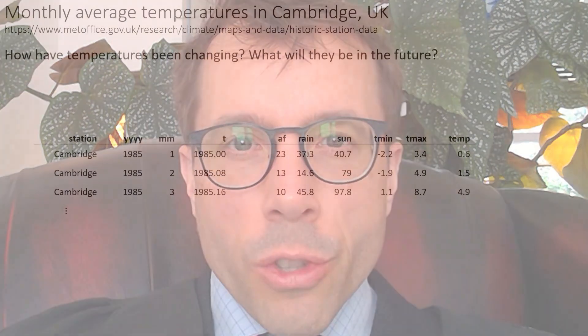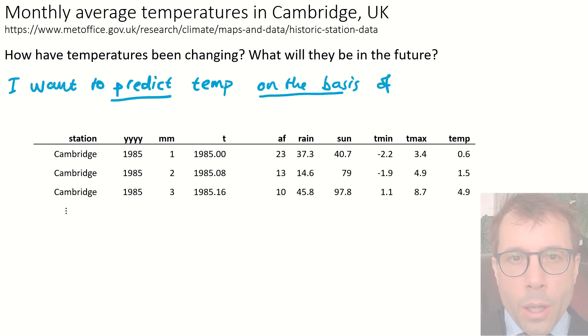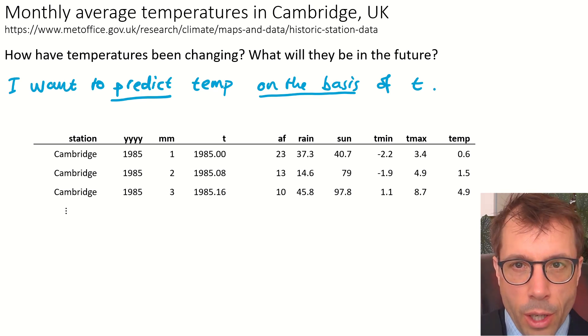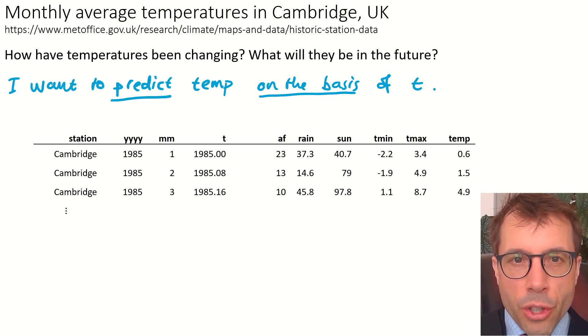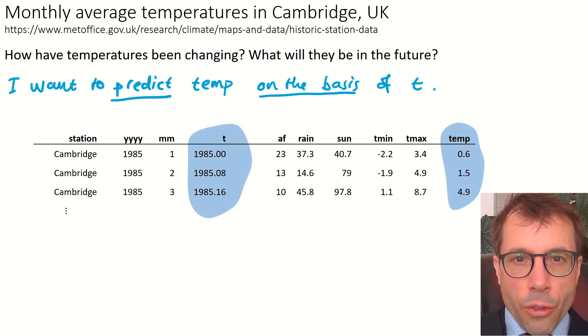So why did we make that modelling choice? It was the question we were asked that led us there indirectly. The question asked how temperatures have been changing and what they will be in the future — and what it really said, reading between the lines, is: how can we predict the temperature variable on the basis of the T variable? That separation of the data set into things we're trying to predict versus things we're basing our prediction on was implicit in the question.